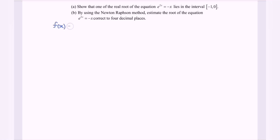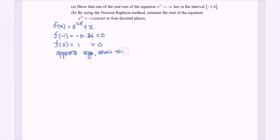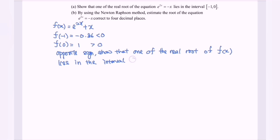Hello everyone. In this video, I'm going to discuss the example for Newton-Raphson. Show that one of the real roots of f(x) = e^(2x) + x lies in the interval (-1, 0). Substituting x = -1 gives approximately -0.86, which is less than 0. Substituting x = 0 gives 1, which is greater than 0. Since the signs are opposite, a root lies in (-1, 0).